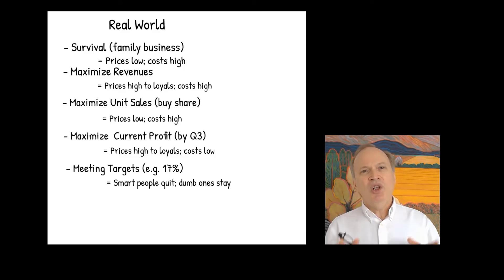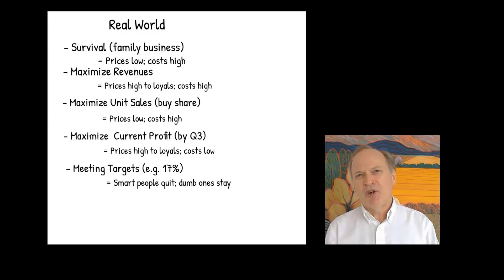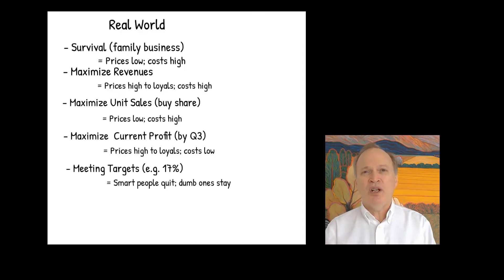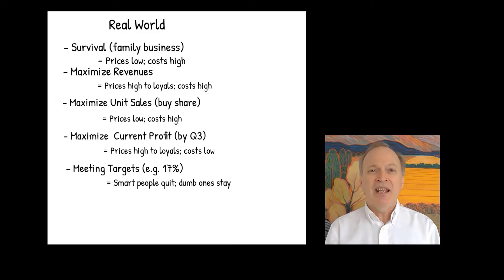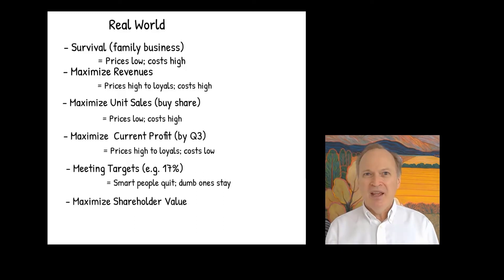A little trick: when someone says we want to maximize revenue, just say 'why?' When they say maximize market share, ask 'why?' Keep asking why — and ultimately if you play the why game long enough with an executive, what they will say is: 'The reason we want to do that is because we believe it maximizes shareholder value.' This is the four-star winning way of pleasing the C-suite: shareholder value.